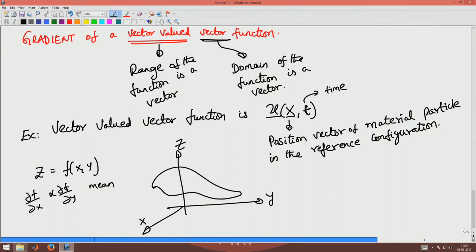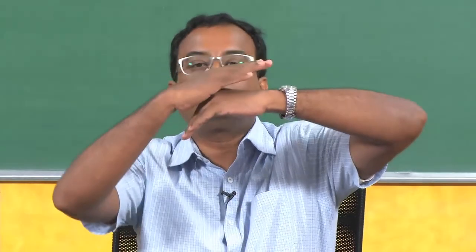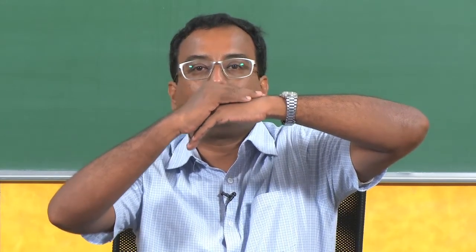Say this is the surface on the x and y axis — the x and y axis are in the plane, and this is the z axis. I get a surface like this, and what the gradient of z represents is it represents the tangent plane to that surface.